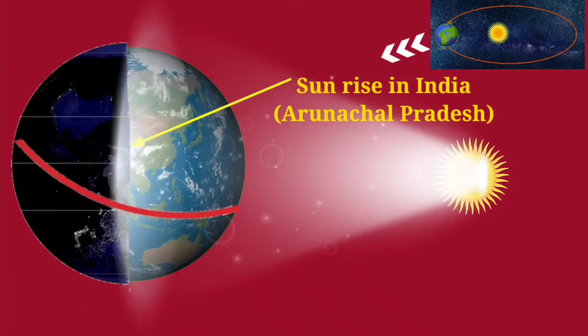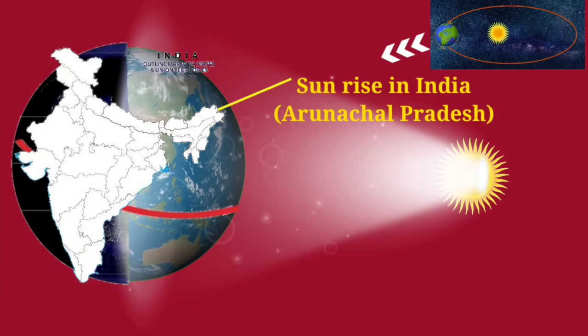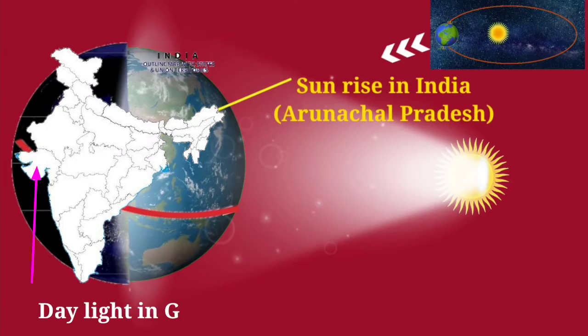And due to west to eastward rotation of the earth, the easternmost state that is Arunachal Pradesh in India receives first daylight. And after that almost two hours later, Gujarat also experiences this daylight.